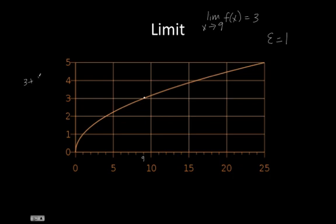So we know that 3 plus epsilon is equal to 4 and 3 minus epsilon is equal to 2. So if we look at our graph, the x value that corresponds to an f of x value of 2 is equal to 4, and the x value that gives us an f of x that corresponds to a value of 4 is equal to 16.